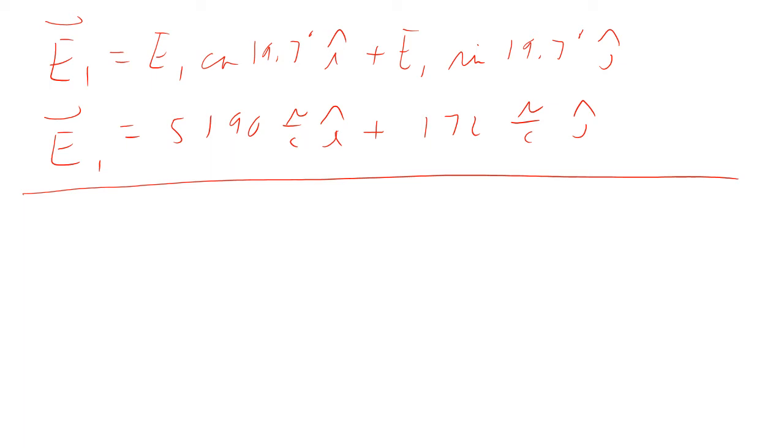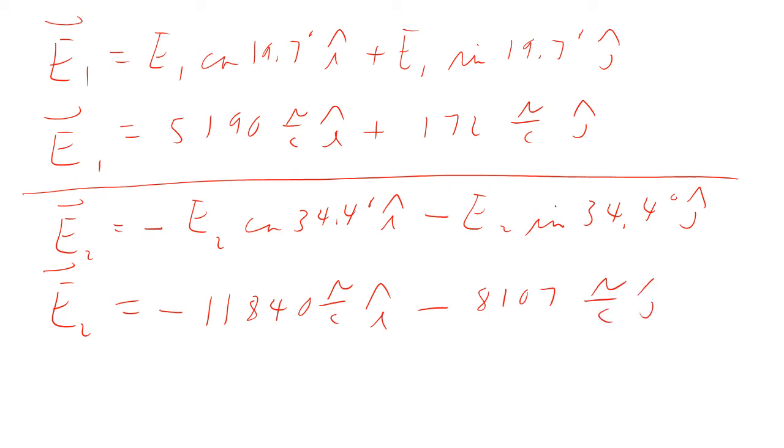So now we want to figure out for E2. So for E2, remember for E2 we had Q2. We had it here and it was going this way. So this angle right there is 34.4 degrees. So it's going to the left and down. So that means that E2 vector is going to be minus E2 cosine 34.4 degrees I minus E2 sine 34.4 degrees J. Again, going back to what you were doing in physics 1, finding components of vectors. So E2 turns out to be minus 11,840 newtons per coulomb I minus 8,107 newtons per coulomb J.